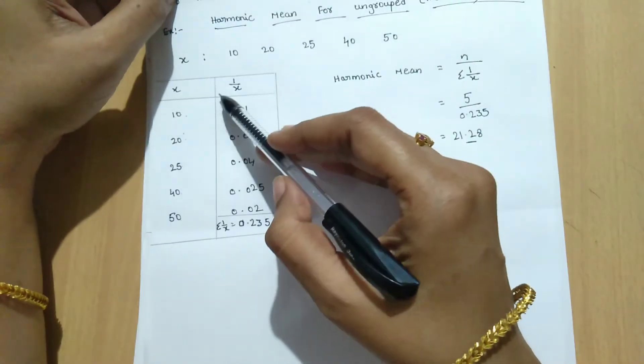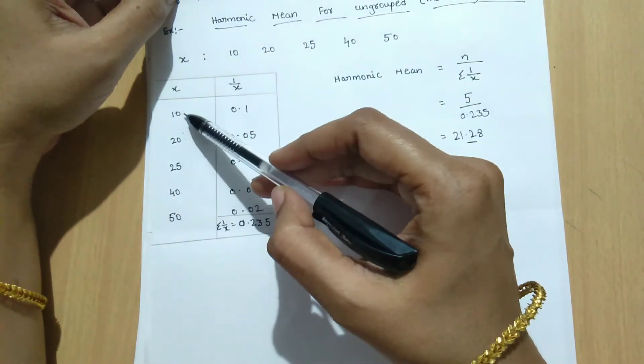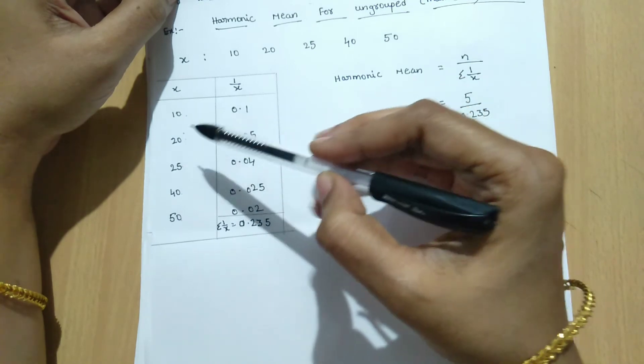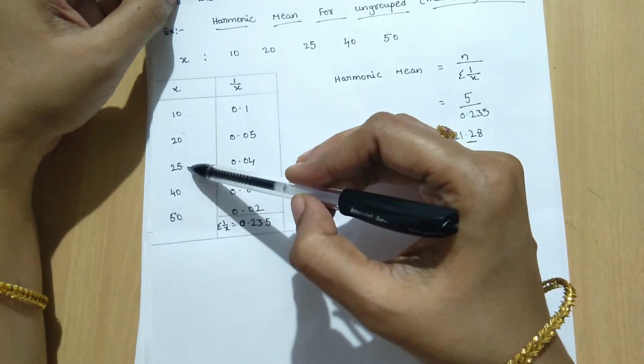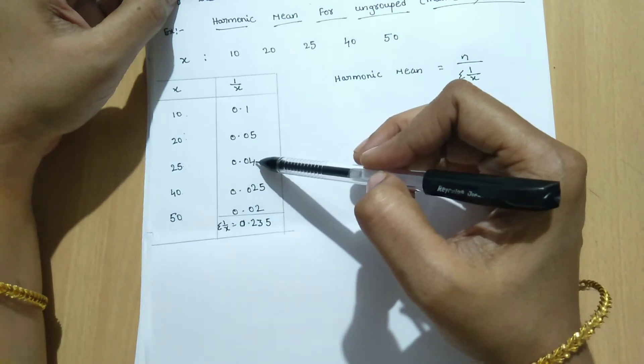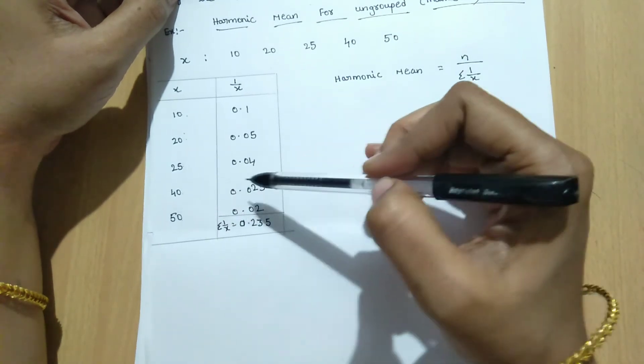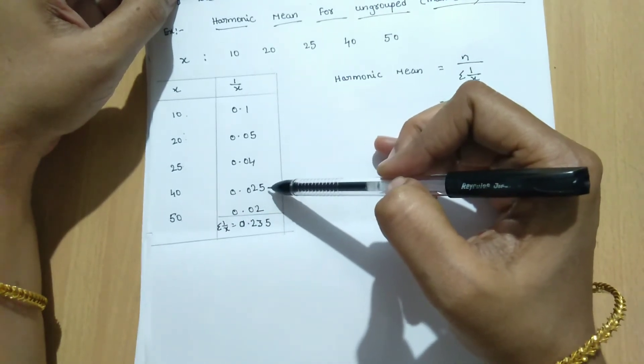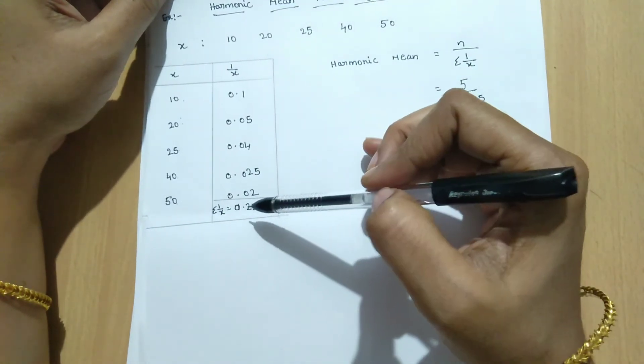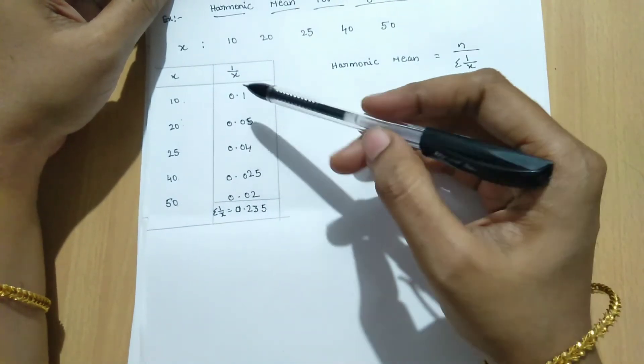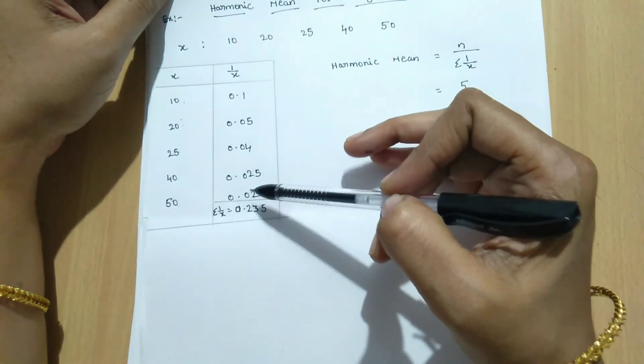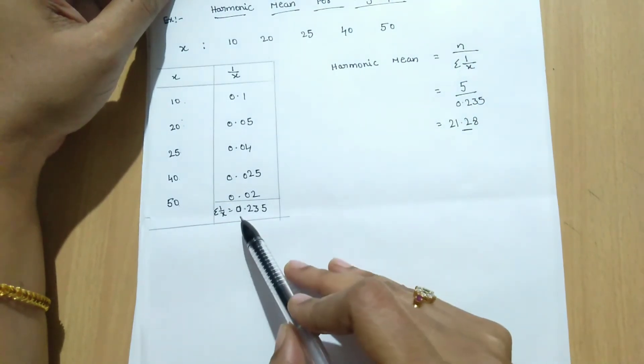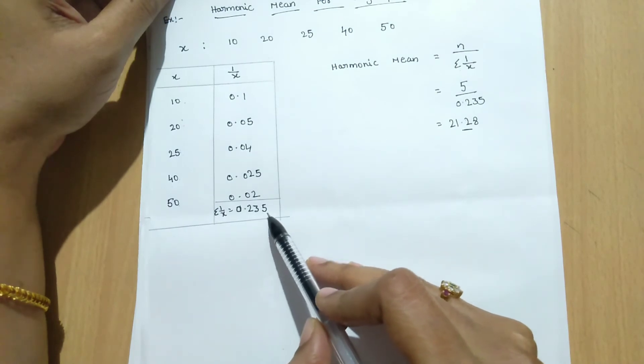Now we calculate 1 by x values. 1 by 10 equal to 0.1, 1 by 20 equal to 0.05, 1 by 25 equal to 0.04, 1 by 40 equal to 0.025, 1 by 50 equal to 0.02. Next we find summation 1 by x. Adding these values gives summation 1 by x equal to 0.235.